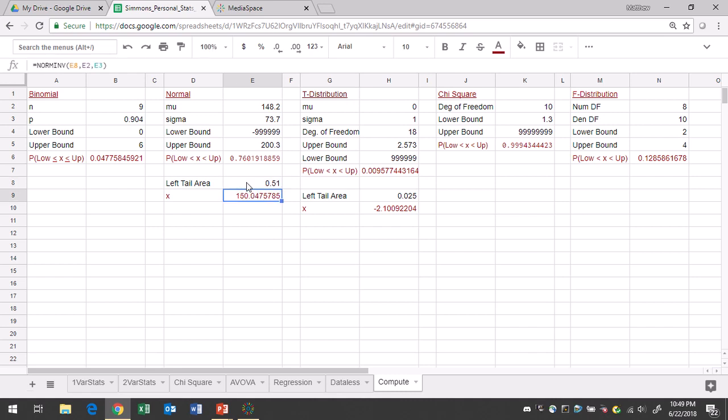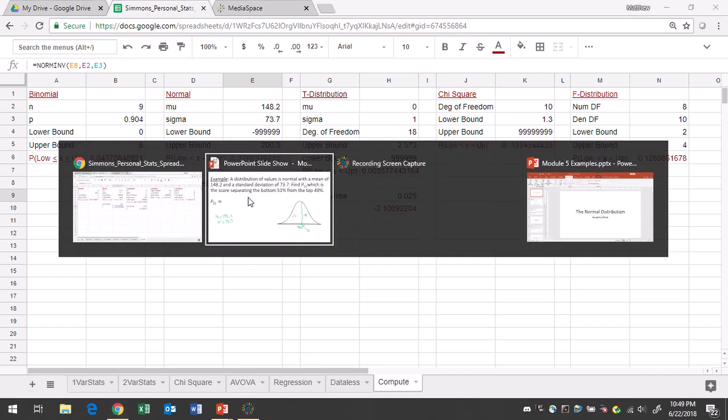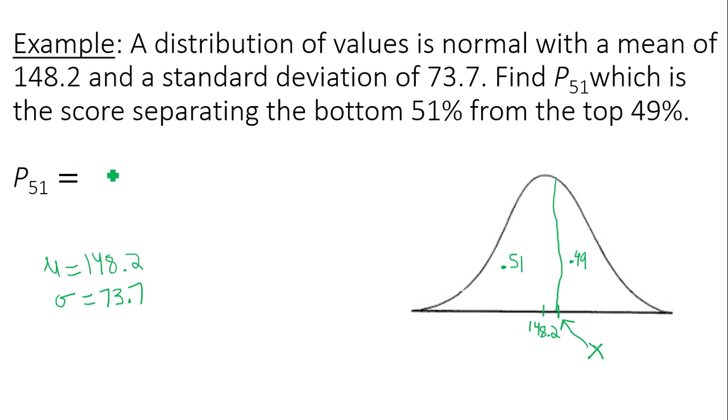This means our percentile, our answer to the question, is 150. 150 is our answer. That is the score separating the bottom 51% from the top 49%.